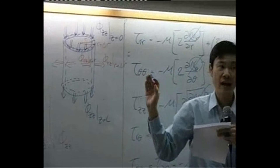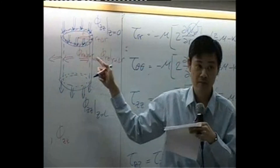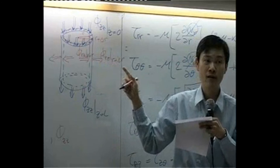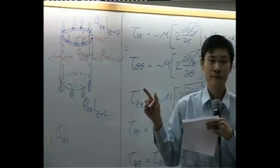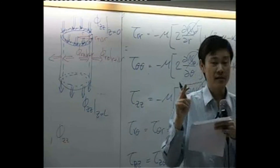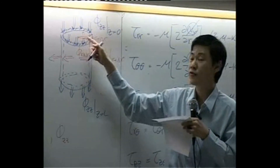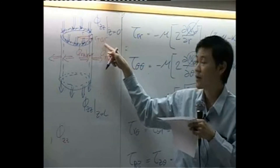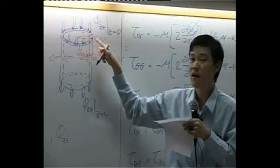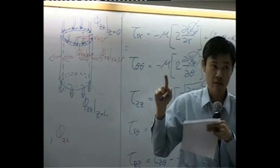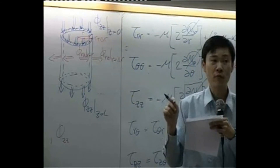The flux is going along the Z-direction, so the area used for multiplication must be the highlighted ring area. There are two ways to calculate the area of this ring: one is π(r + Δr)² minus πr², but that is more complicated.